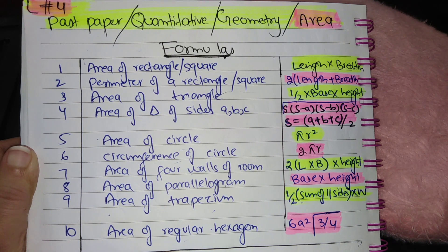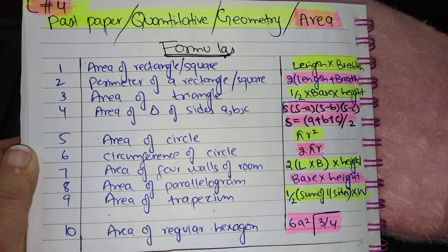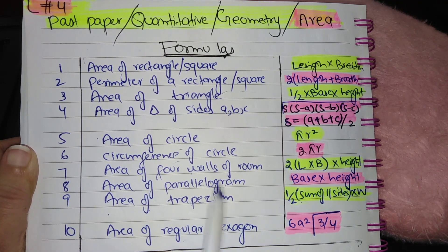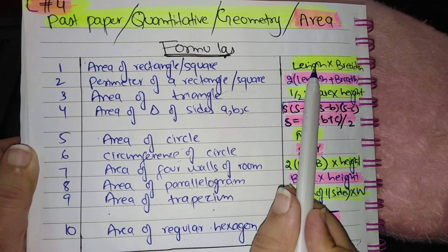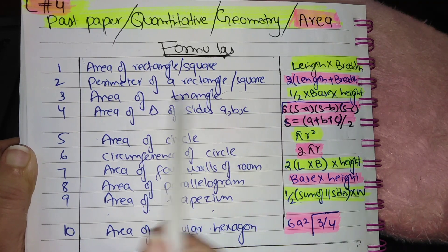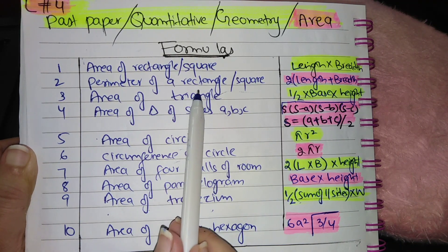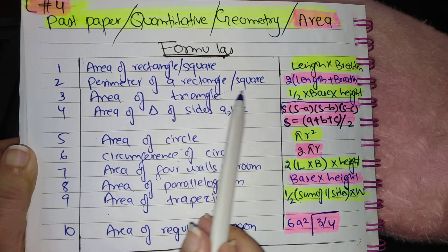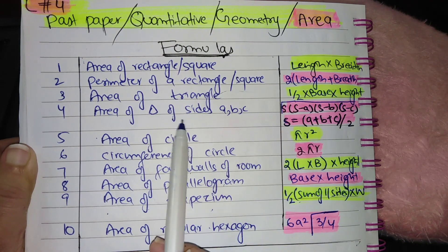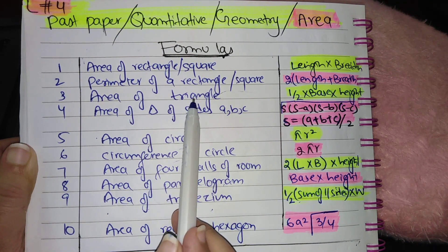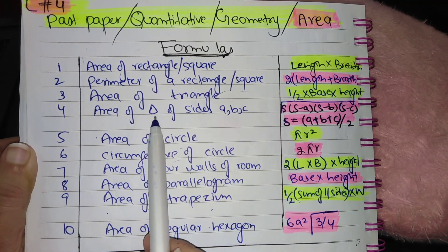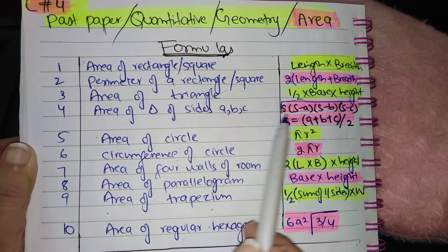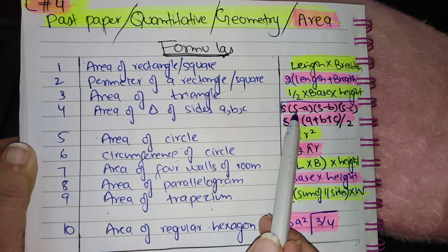Before starting the questions, I am going to discuss some basic formulas which will be used in the questions — you have to memorize these. Formula for area of rectangle and square: length multiplied by breadth. Perimeter of rectangle or square: 2 multiplied by (length plus breadth). Area of triangle: half into base into height.